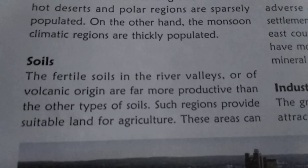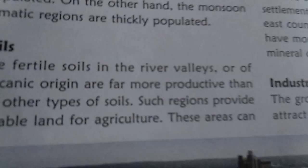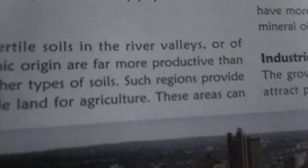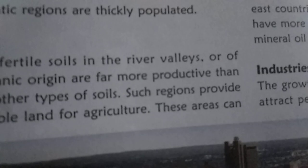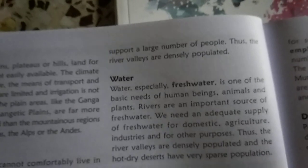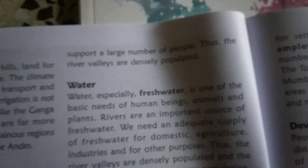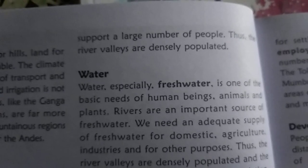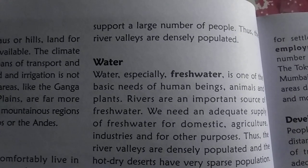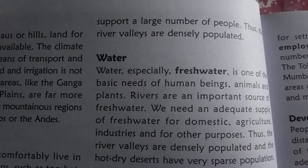Next is soil. In hilly areas, dry areas, and cold areas, the soil is not suitable because in hilly areas the soils are not good for agriculture. Those areas are not suitable for people to live. That's why river valleys are densely populated, because the valleys have a good amount of soil that supports their life.